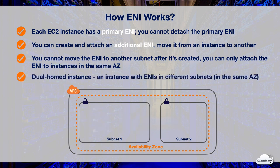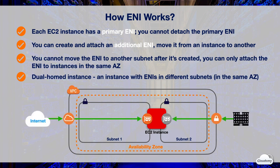An EC2 instance can have multiple ENIs in different subnets, but in the same availability zone — referred to as the dual-homed instance. A dual-homed instance can connect to resources in different networks. For example, you can create a dual-homed instance with a public-facing ENI to handle internet requests, and a private ENI for access from a private network.